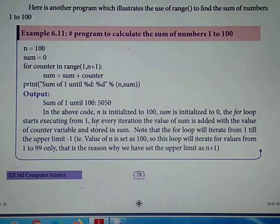See the explanation: In the above code, n is initialized to 100, sum is initialized to 0. The for loop starts executing from 1. For every iteration, the value of sum is added with the value of counter variable and stored in sum. The value of n is set as 100, so this loop will iterate for values from 1 to 99 only. That is the reason why we have set the upper limit as n plus 1.